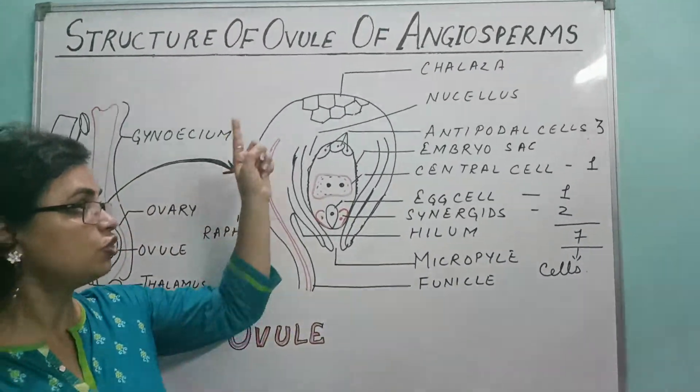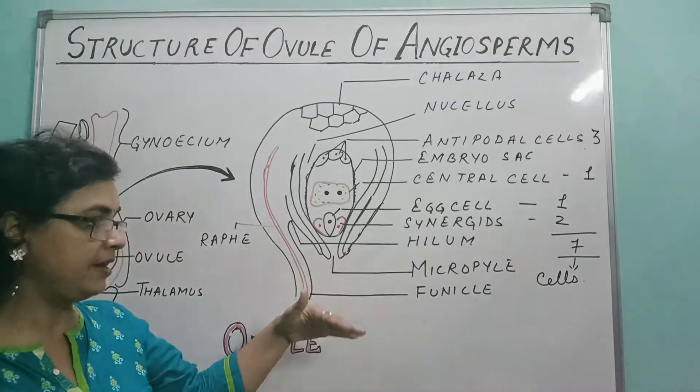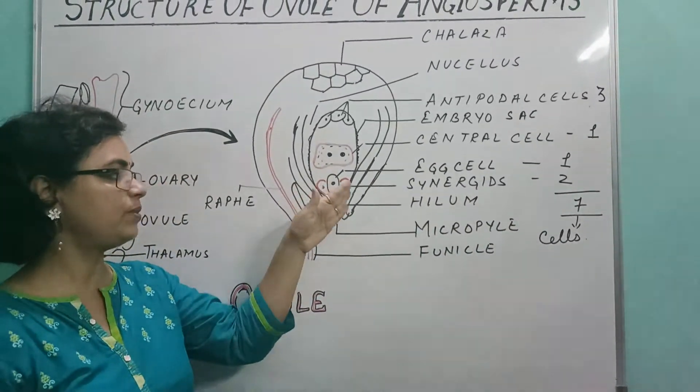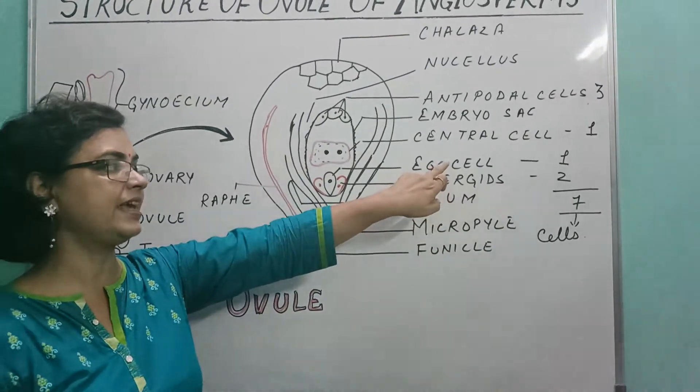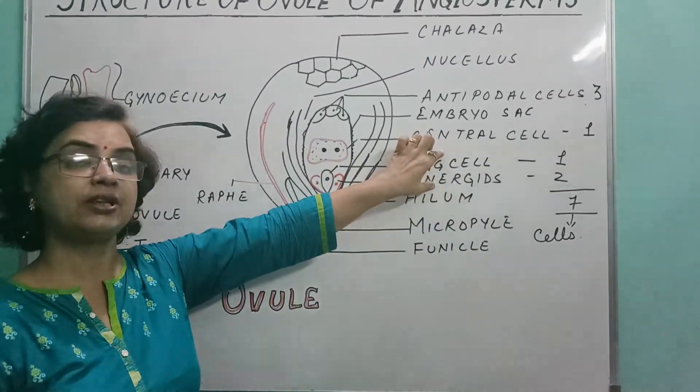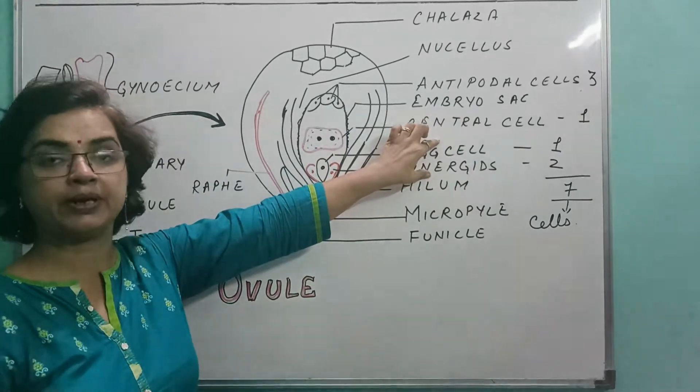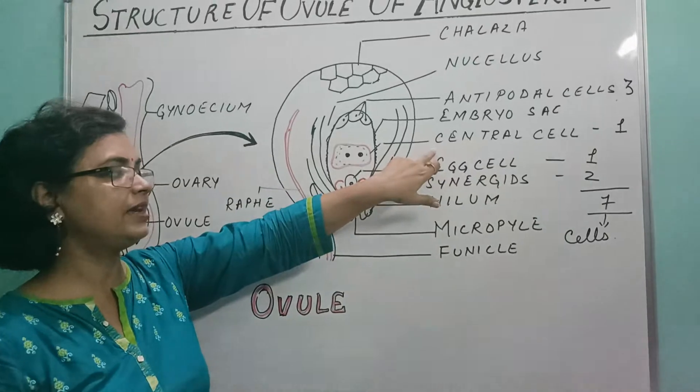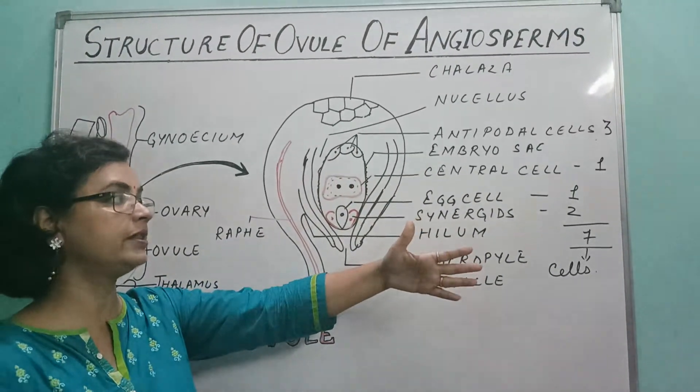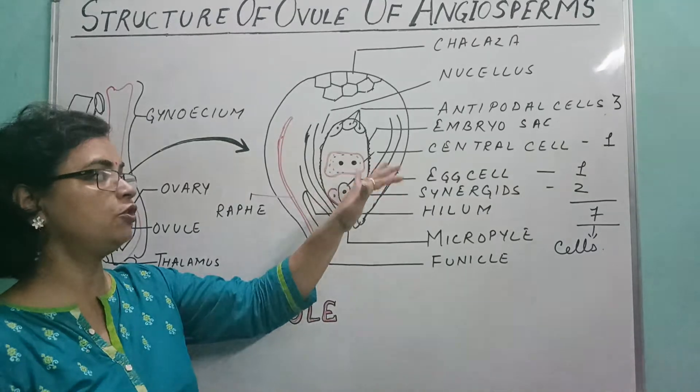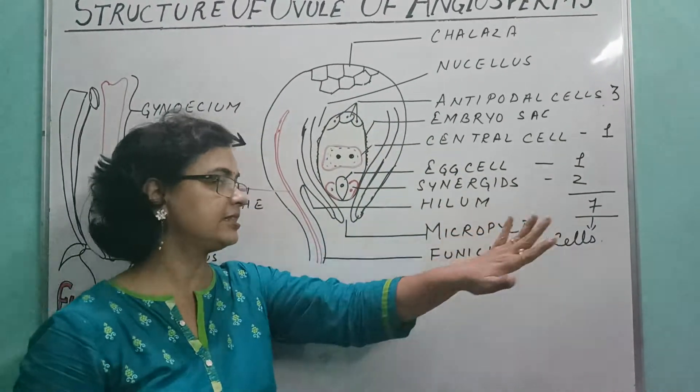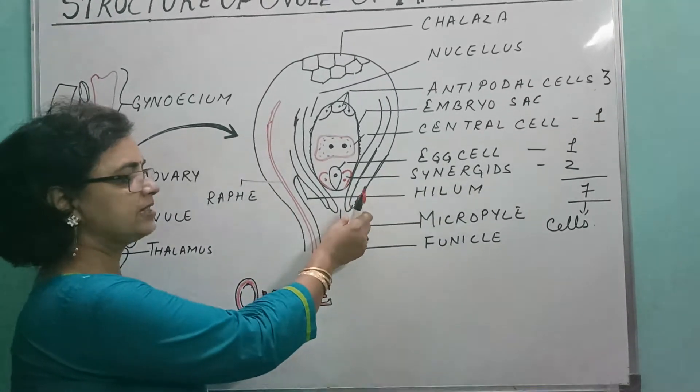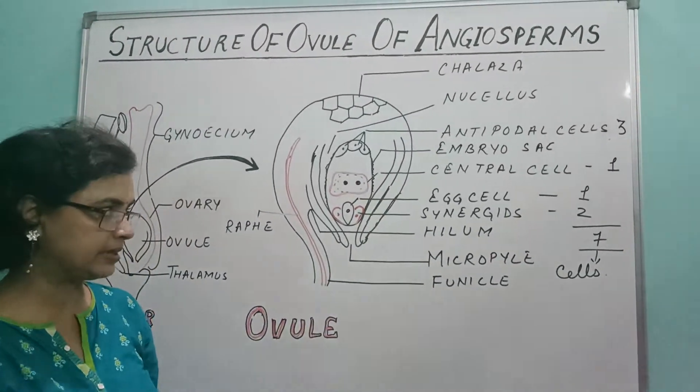Now this structure of the ovule, in the next video I will teach you the double fertilization. So these meaning words are very much important like synergids and egg cell. Altogether these 3 cells are termed as egg apparatus. We will discuss in the next video. The central cell is again responsible during the double fertilization to make the endosperm. So but keep it in your mind that there are 7 cells along with 8 nuclei, and micropyle is the place where these 2 integuments are not present.